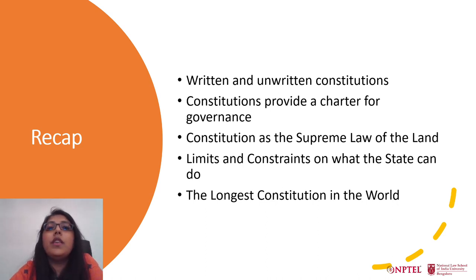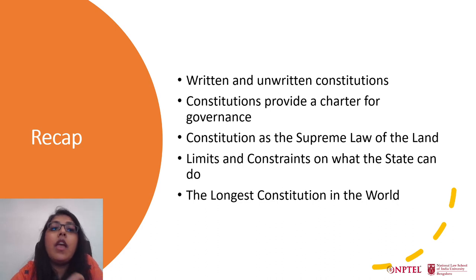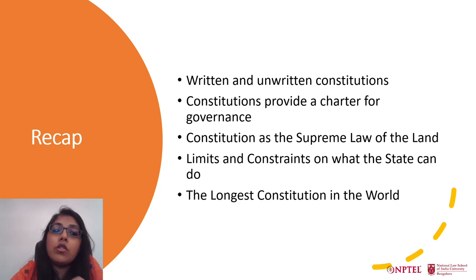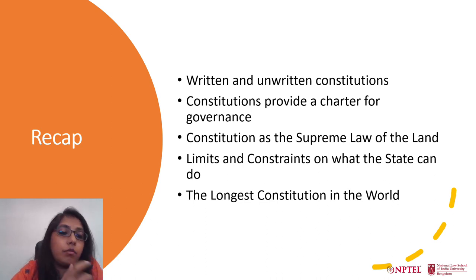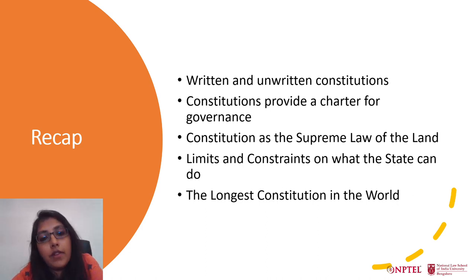The Constitution of India 1950 does something different from the constitutions that came before it. The colonial and Mughal constitutions empowered; the Constitution of India 1950 also places limits and constraints on what the state can do. It does not just define who has the power — it also limits what the state can do. The best example of that is fundamental rights, where the state cannot transgress the limits they set.